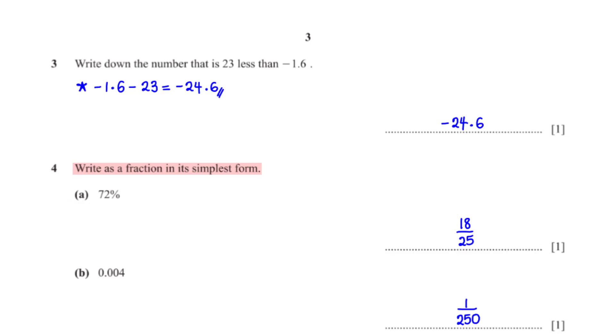Write as a fraction in its simplest form: 0.004. When we type 0.004 into the calculator we get 1 over 250.